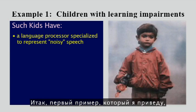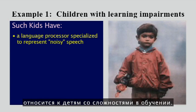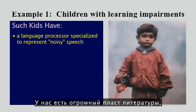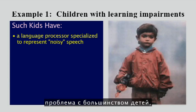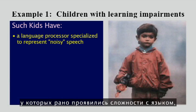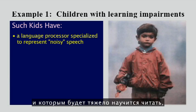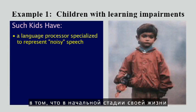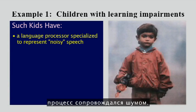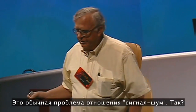The first example I'm going to talk about relates to children with learning impairments. We now have a large body of literature that demonstrates that the fundamental problem in the majority of children that have early language impairments and are going to struggle to learn to read is that their language processor is created in a defective form — because early in the baby's brain's life, the machine process is noisy. It's a signal-to-noise problem.